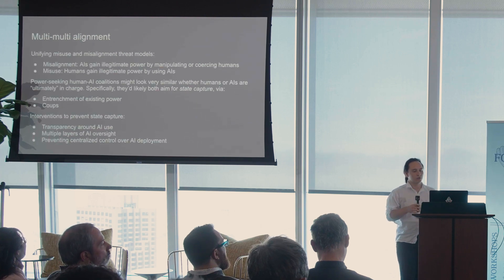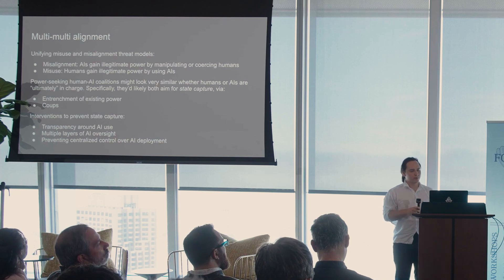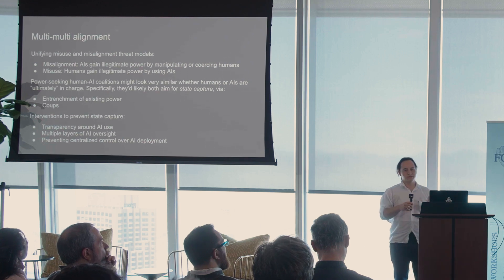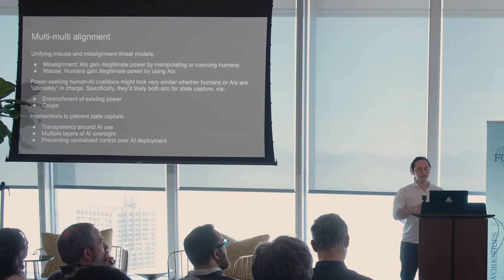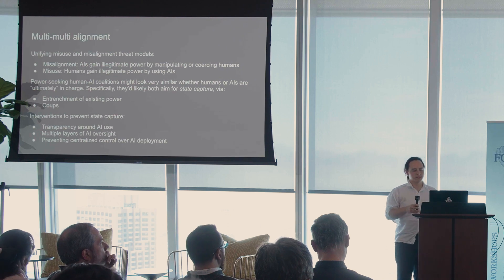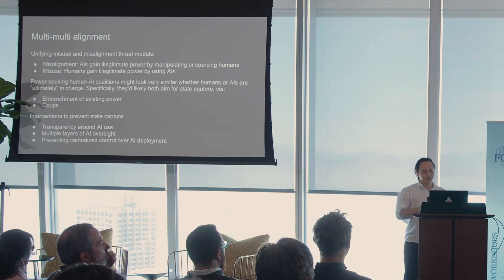Very quickly on multi-multi alignment — many AIs and many humans. I think the misuse and misalignment threat models tend to actually be much more similar than we typically think. When we think about misalignment, we think about AIs gaining illegitimate power by manipulating or coercing humans. When we think about misuse, it's humans gaining illegitimate power by using AIs. But either way, the coalition of humans and AIs working together might look very similar in either case, regardless of who's ultimately in charge. We can think about multi-multi alignment in many of the same ways we think about preventing humans from seizing undue power over states.